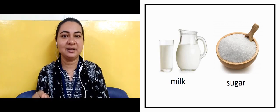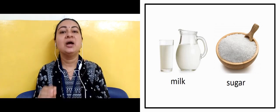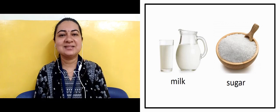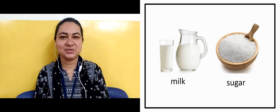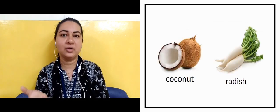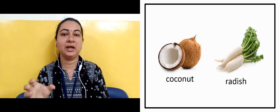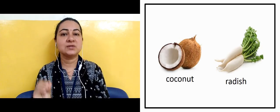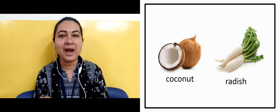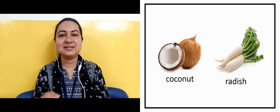The next slide shows us coconut. Coconut outer layer is brown color but under the shell it is white in color. Another one is radish and radish color it is white in color.